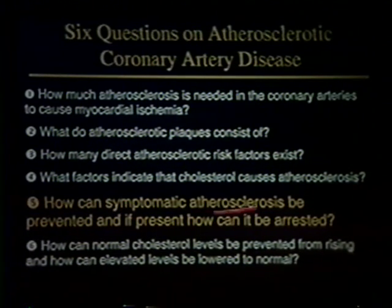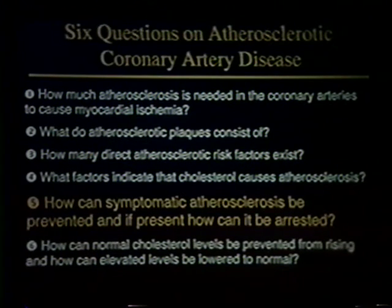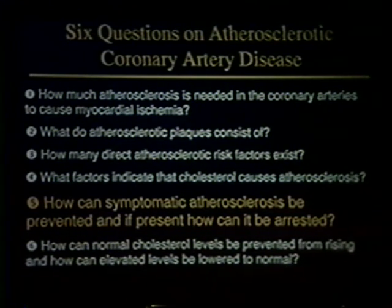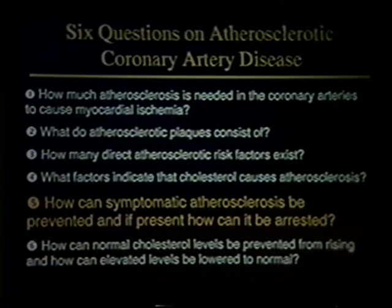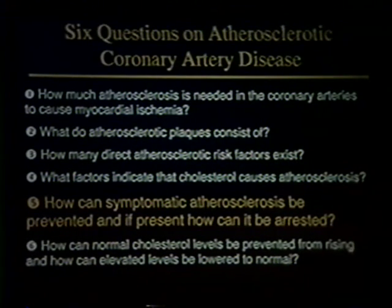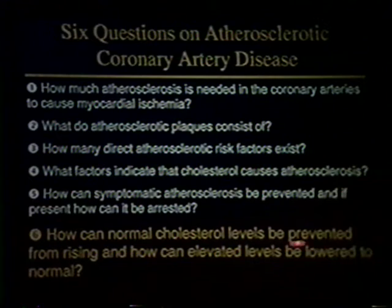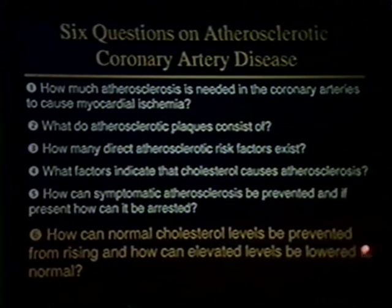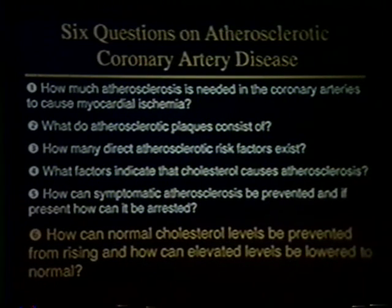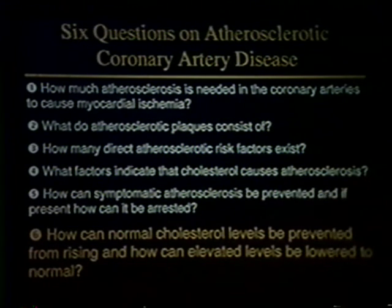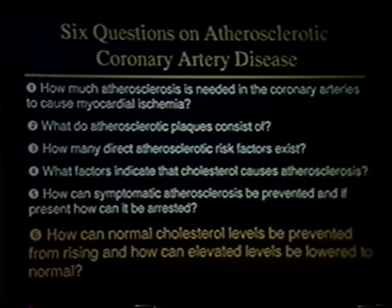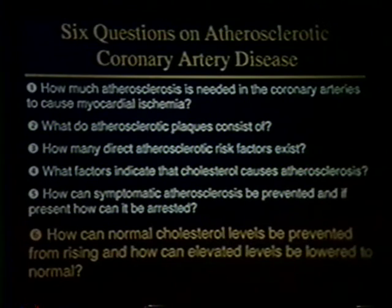Question five: how can symptomatic atherosclerosis be prevented, and if present, how can it be arrested? I don't care how you get there, but if you want to prevent plaques from forming — or prevent new plaques in someone who's already had a heart attack — you want to get total cholesterol in the 150 arena and LDL less than 100. We now have the armamentarium to do it. We've got to do three things: decrease the quantity of cholesterol we take in, decrease saturated fats, and almost surely decrease total calories.